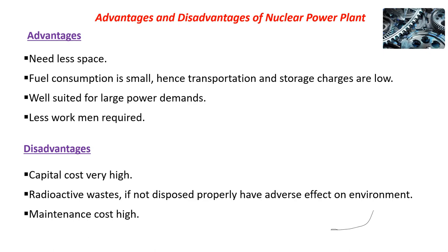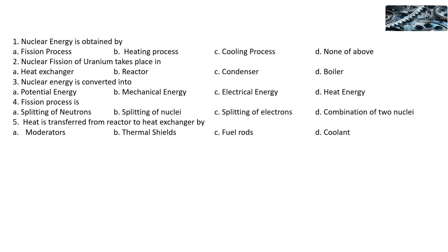That is sufficient for the nuclear power plant. This is lecture number 3 of Chapter 1: Energy and Energy Sources. Before closing, there are some MCQs to go through. Nuclear energy is obtained by: fission process, heating process, cooling process, or above all — the answer is fission process. Nuclear fission takes place in: heat exchanger, reactor, condenser, or boiler — the answer is reactor.